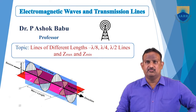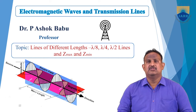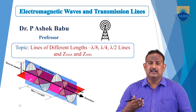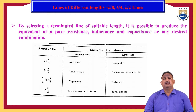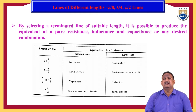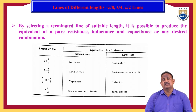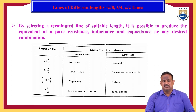Hi everyone, myself Dr. Piyashuk Bahu, working as professor and head of the EC department. In this video I am going to discuss about lines of different lengths, maximum impedance and minimum impedance — Z max and Z minimum. By selecting a terminated line of suitable length, it is possible to produce the equivalent of a pure resistance, inductance, or capacitance, or any desired combination.